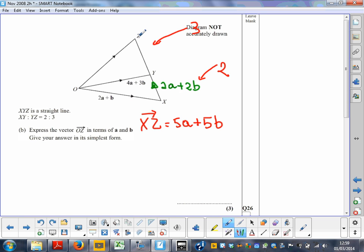Now if I want to find out O to Z, from O to Z I can go from O to Y then Y to Z. There are many ways to do this, or I can go from O to X and X to Z.